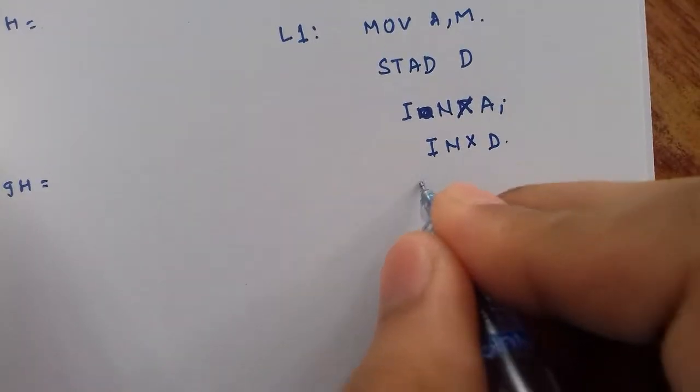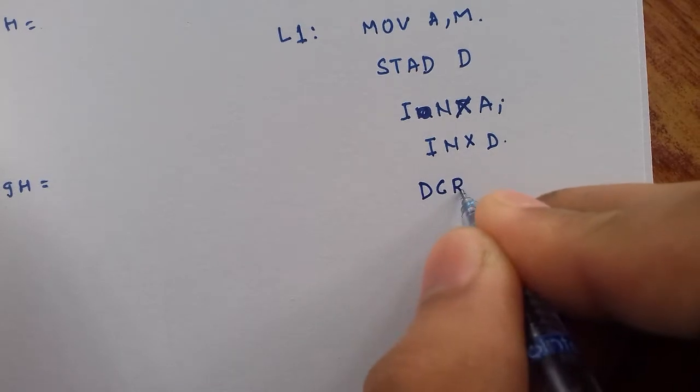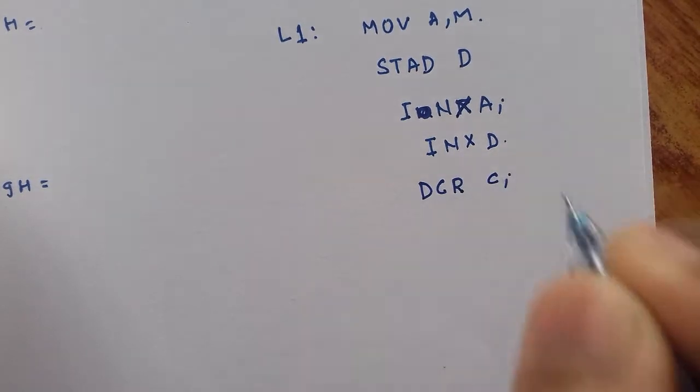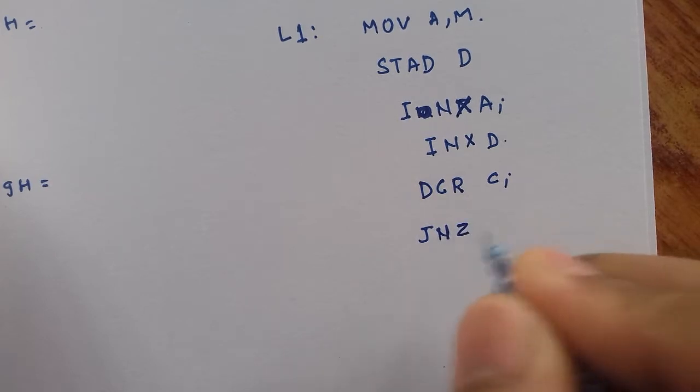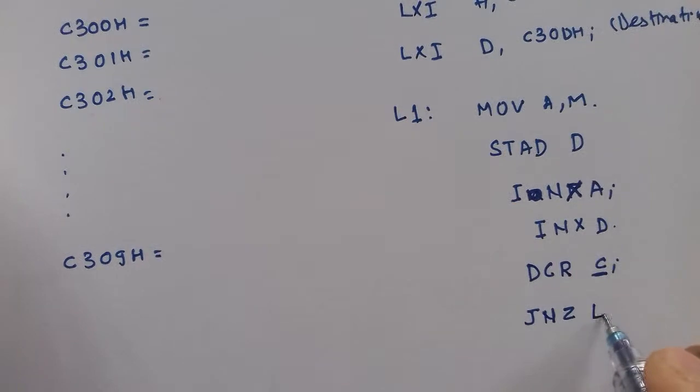Now we need to decrease the counter because we have already performed one operation. We will decrease the counter. We will jump on no zero. If C is not zero we will jump to label L1.